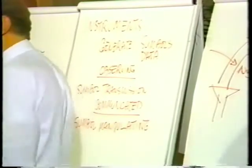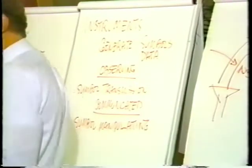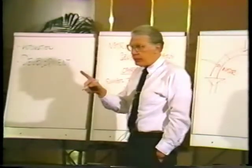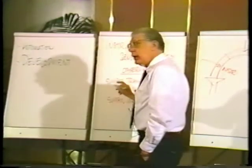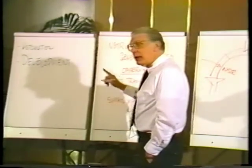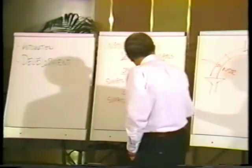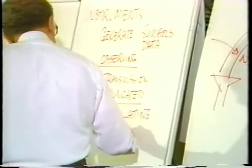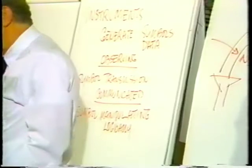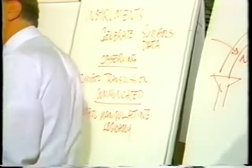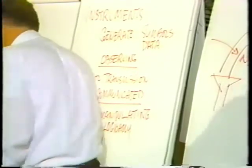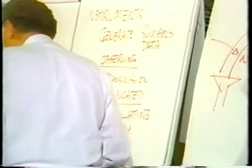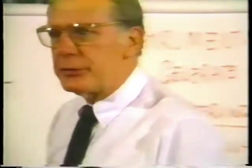Now, when a human being manipulates symbols in accordance with rule — because a computer doesn't manipulate them arbitrarily or randomly, it manipulates them given a program or a logic, so it's manipulating them logically — that's what we call thought. That's why it came to be called a thinking machine. John Dewey wrote a book called How We Think, which was all about the logical manipulation of symbols.